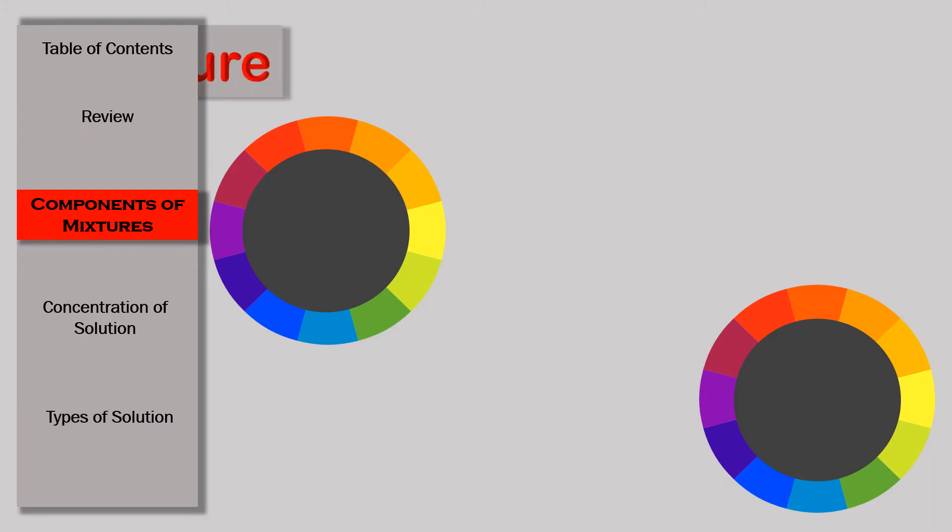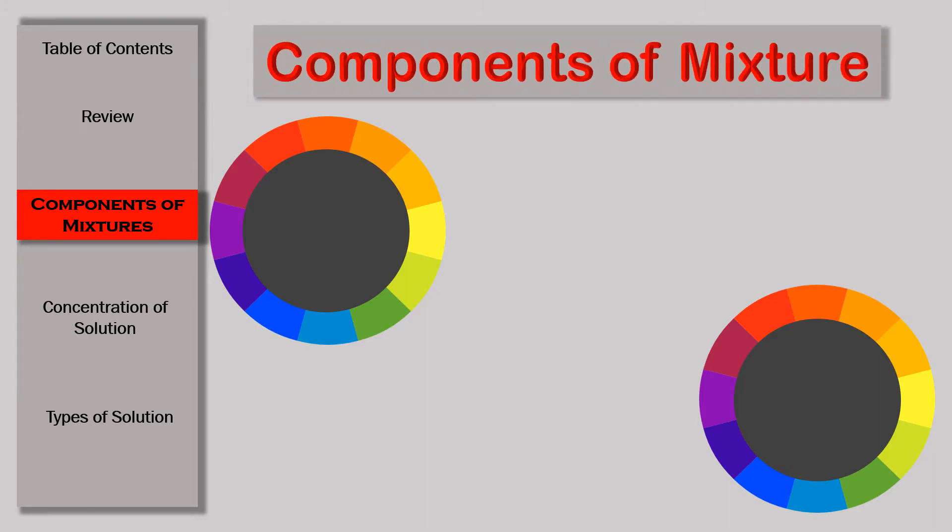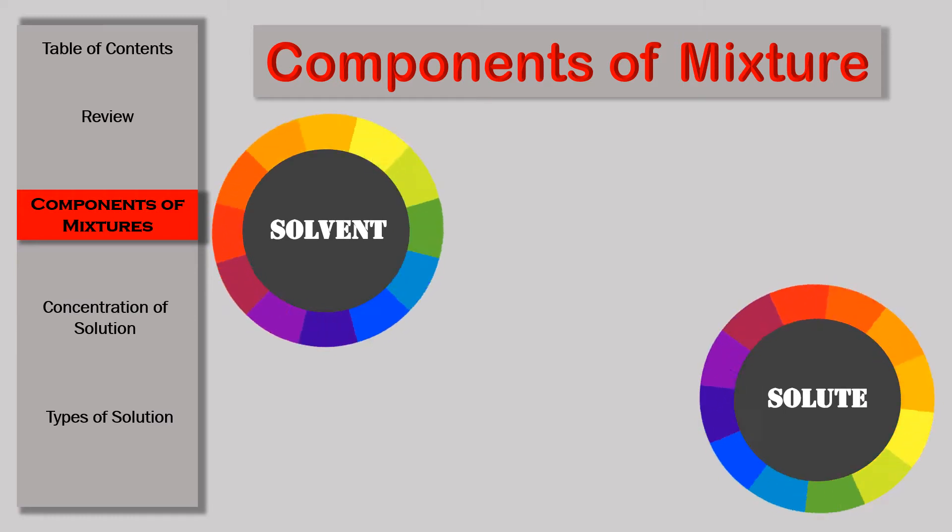Let's talk about components of mixture. We all know that mixture is a combination of two or more substances that are physically combined. Those substances are called the solvent and the solute. What is the difference between the two?